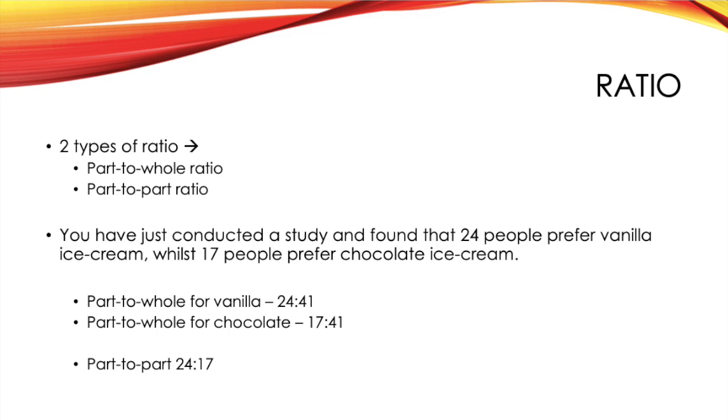And, of course, the 41 is your whole ratios added together, hence the name part-to-whole. So, 17 plus 24 gives you that 41. And then your part-to-whole for chocolate would be 17 to 41. Again, your 17 comes from the question, and the 41 is the total of both ratios added together. Your part-to-part ratio would mean that you just need to take both parts given to you within the question. So, this would just be 24, which comes from vanilla, to 17, which comes from the chocolate.